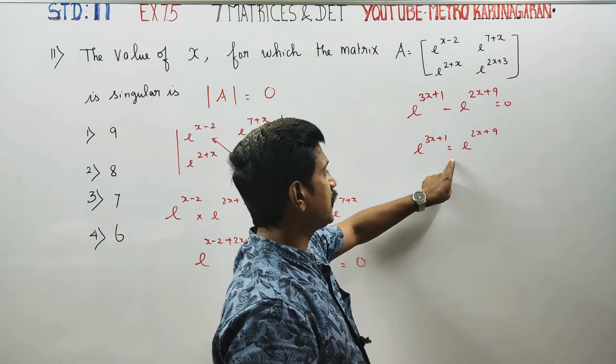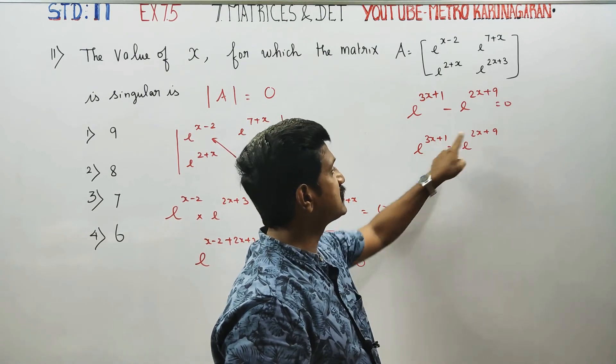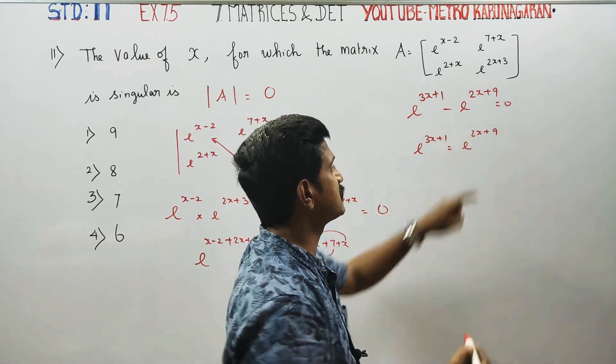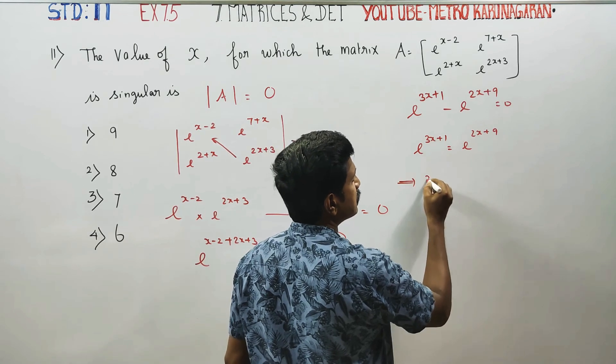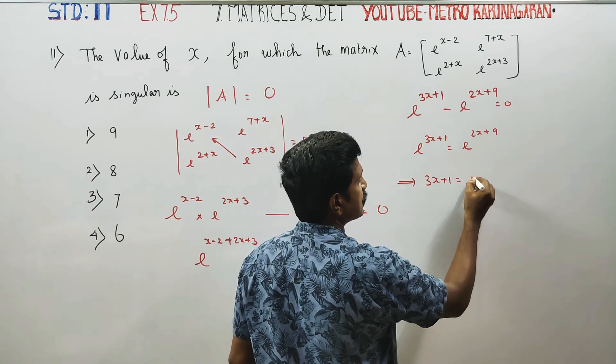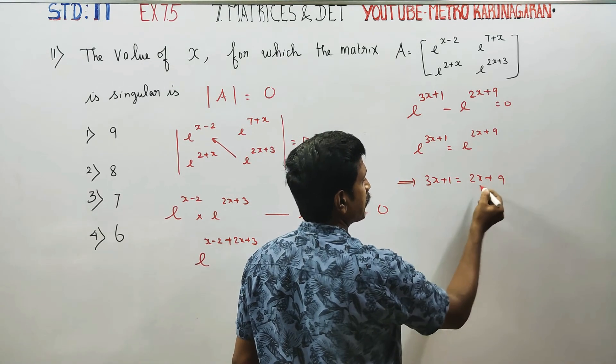In an equation, when bases are the same, powers are equal. Therefore, 3x plus 1 is equal to 2x plus 9.